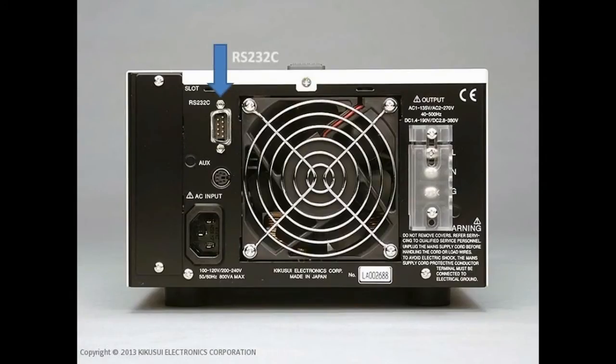The PCR-M also comes with a standard RS-232C interface for external digital control. Other optional digital interfaces include GPIB and USB. An analog input card is also available and allows PCR-M to be used as a power amplifier.